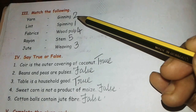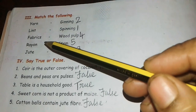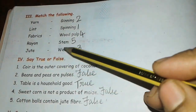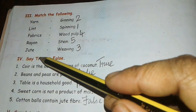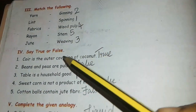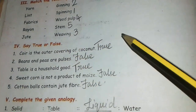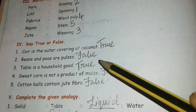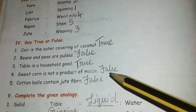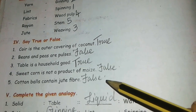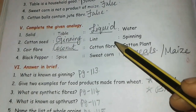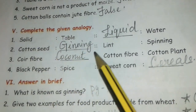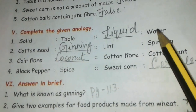Match the following answers: lint, ginning, fabrics, weaving, rayon, wood pulp, jute, stem. True or false: first one — true, second — false, third — true, fourth — false, fifth — false. Next, fifth roman numeral: first one — the solid is table, liquid is water.